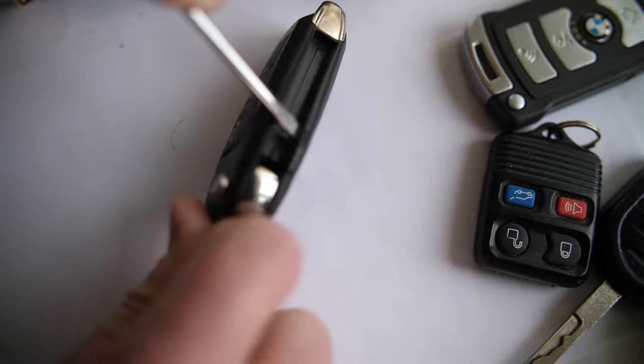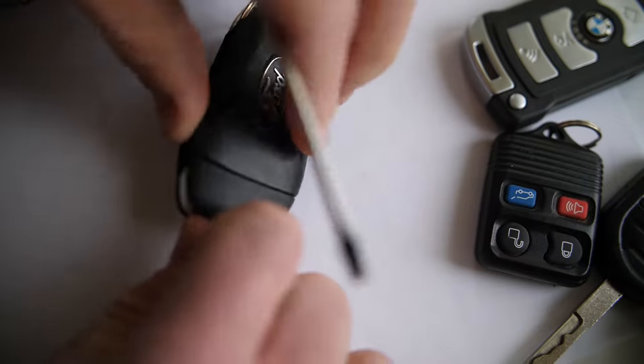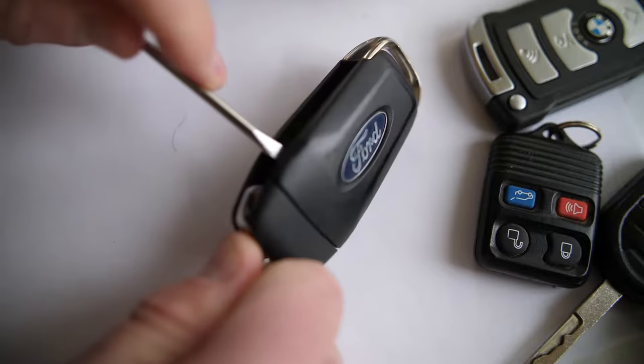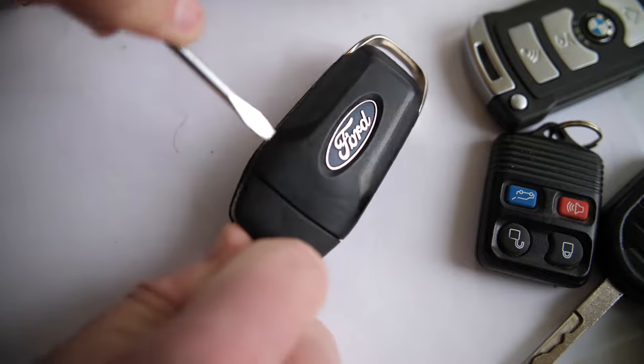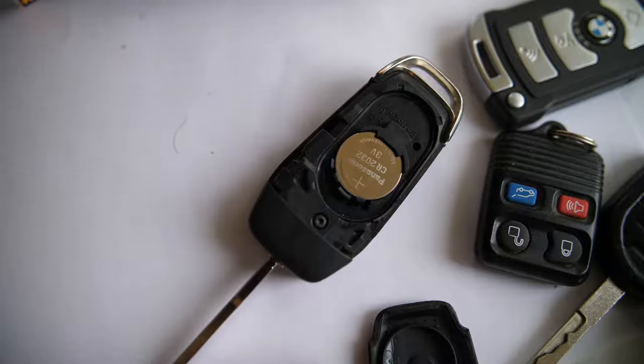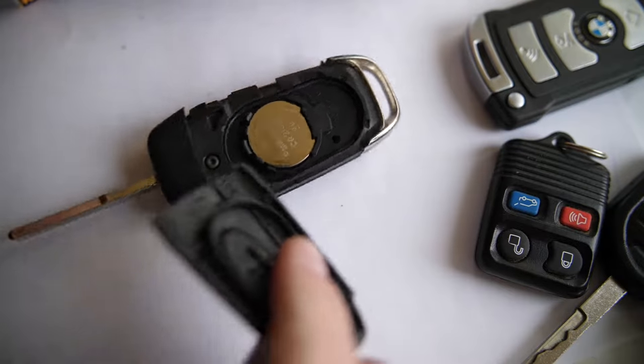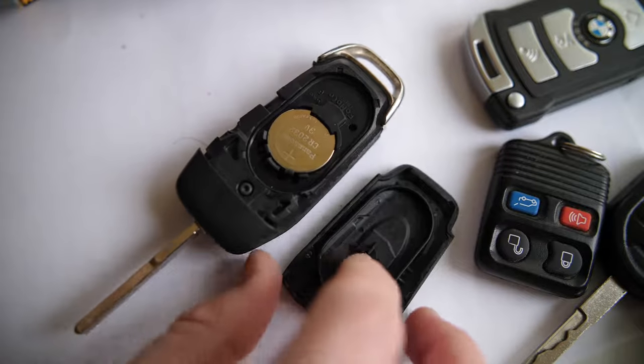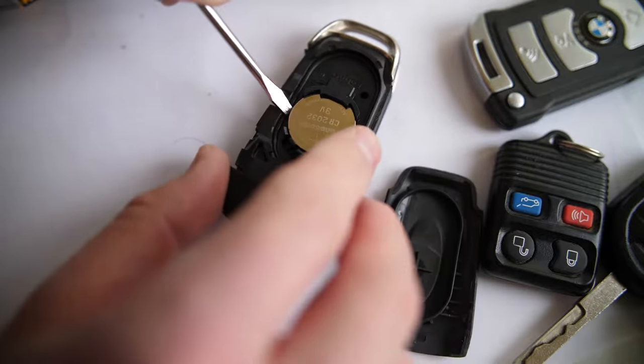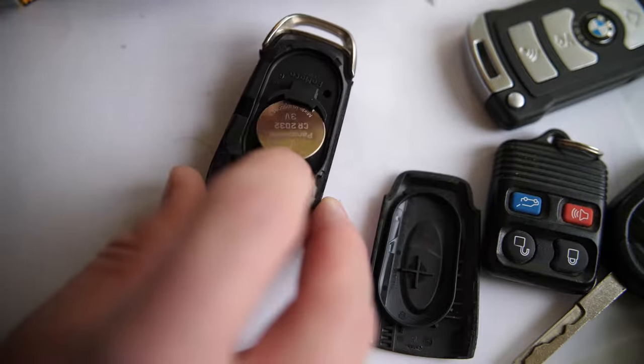It just gives you enough leverage to be able to get this to slowly pop off. And some are easier than others. Whoop! There we go. So again, a lot of these backs will just pop right off. So on your key, look to see if it has kind of an easy back to pop off here, and then you can get in and replace this.